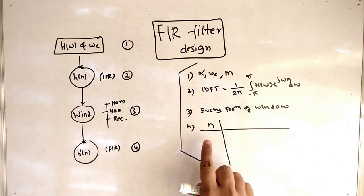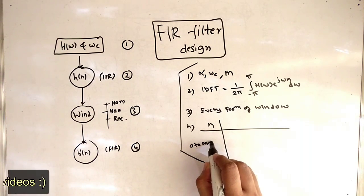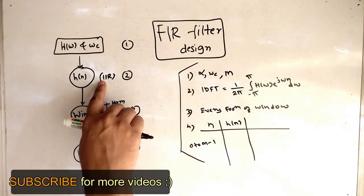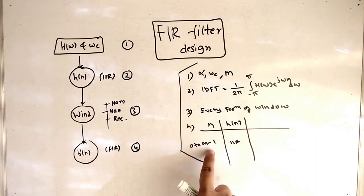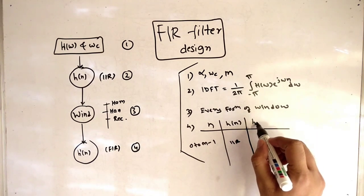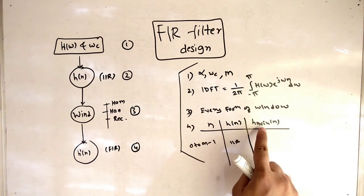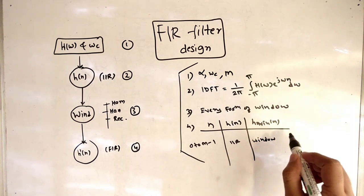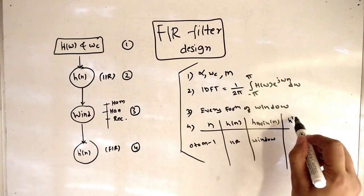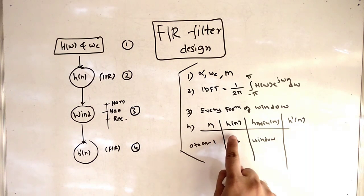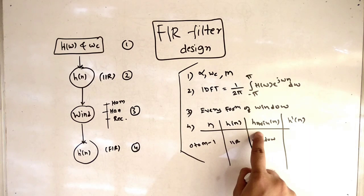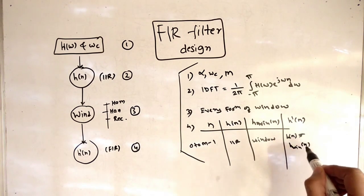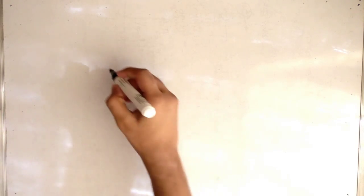The fourth step is to draw a table to get the final answer. The table has: first, the N range from 0 to M minus 1 (so 0, 1, 2, 3 up to M minus 1); second, H of N (IIR) for each N value; third, the window response H_window of N, again from 0 to M minus 1. If we multiply H of N (IIR) with H_window of N, we get the final answer H dash of N.